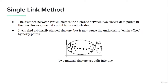The single link method takes the closest data points in the two clusters and measures the distance between them. The advantage is that it can find arbitrarily shaped clusters. However, the disadvantage is that it may cause an undesirable chain effect. If there are noisy data points in two clusters, this algorithm considers them part of the clusters and measures the distance between them, forming a chain effect that can split two natural clusters incorrectly.